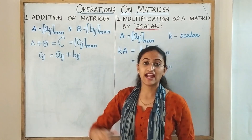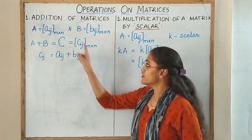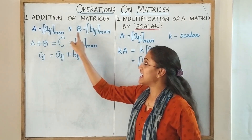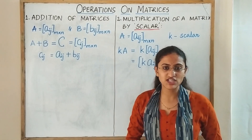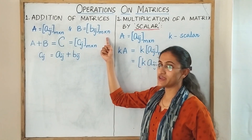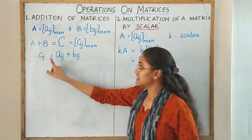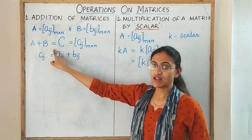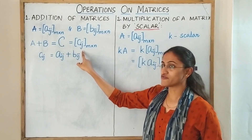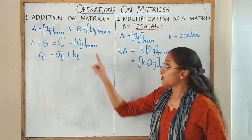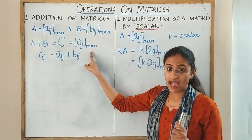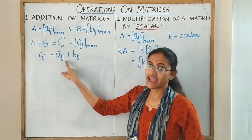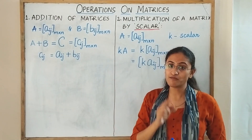Now we shall learn about operations on matrices. The first one is addition of matrices. If you are given two matrices A and B, where A equals [a_ij] and B equals [b_ij], with the condition that both orders should be equal — say m cross n — then the sum A plus B equals a matrix C of the form [c_ij] of the same order m cross n, where each element c_ij equals a_ij plus b_ij for all possible values of i and j.